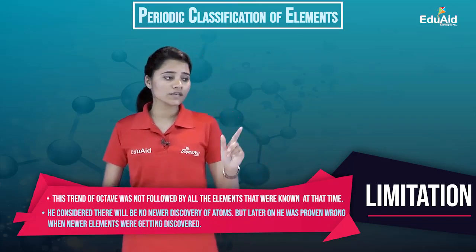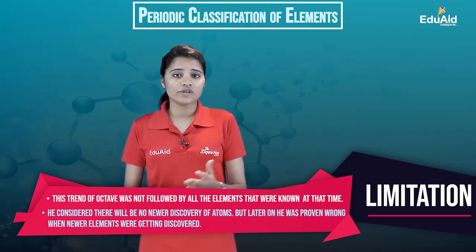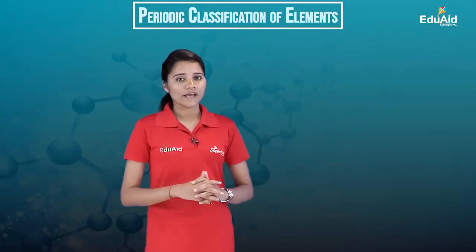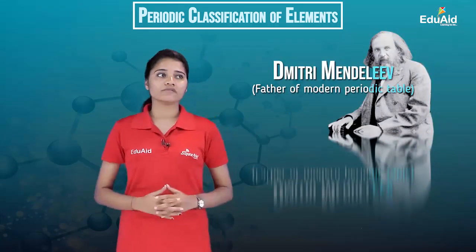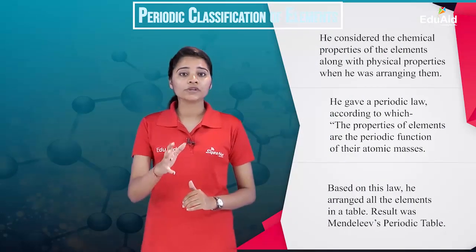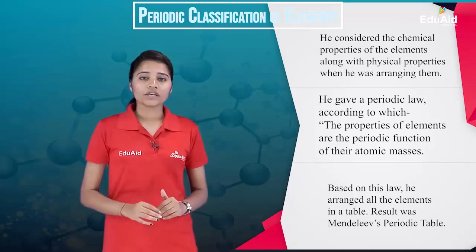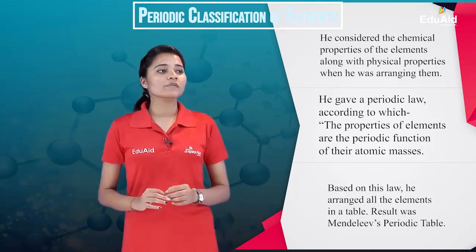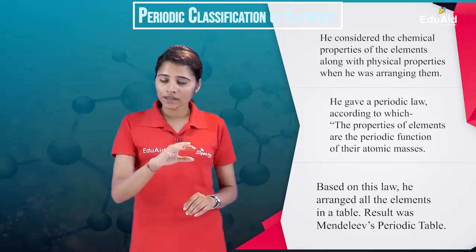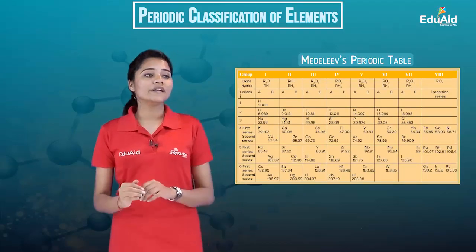Newlands considered that no new elements would be discovered; however, his assumption was proven wrong when new elements were later discovered. Among the earlier scientists, the best attempt to arrange the elements was done by Mendeleev, who is also known as the father of the modern periodic table. While arranging the different elements, he took into account their physical and chemical properties. He also gave a periodic law stating that the properties of elements are periodic functions of their atomic masses, and based on this law, he arranged the elements in what is known as Mendeleev's periodic table.